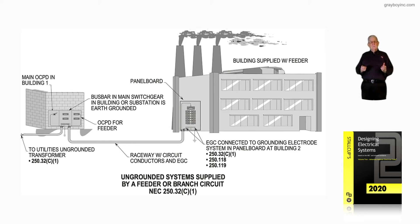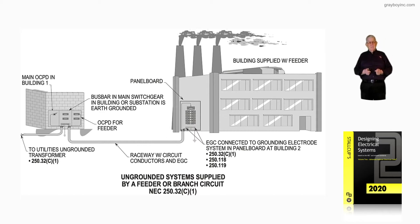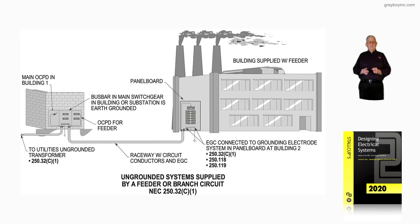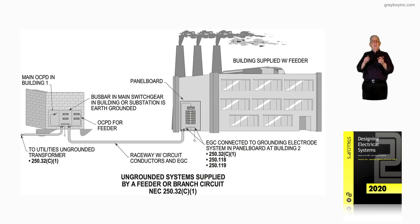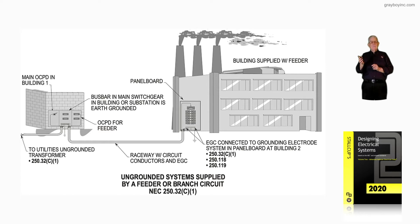Previously we've looked at systems that were grounded — in other words, the power supply transformer, whatever was supplying the power, was a grounded system. Notice the building to the left with the service equipment: the utilities are supplying an ungrounded system. The transformer is not grounded, and these provisions have been worked out with the utility to supply an ungrounded system. So the service supplying the building or buildings is ungrounded because of the manufacturing procedure of these buildings. Notice the raceway routed from the main building one over to the building to the right is an ungrounded system.